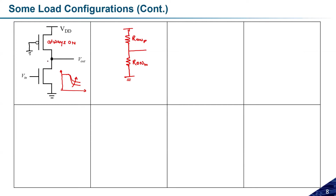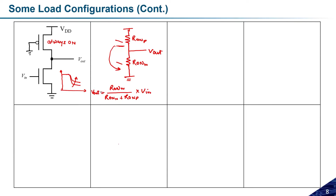If both transistors have equal sizing, we know the mobility of holes and electrons differ, so the resistances will be different. Assuming equal sizing, the pMOS resistance will be roughly double the nMOS resistance. Vout = Ron_nMOS / (Ron_nMOS + Ron_pMOS) × VDD. So if we keep increasing the strength of the pMOS transistor, this denominator increases and Vout starts reducing.